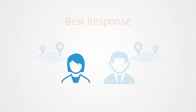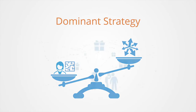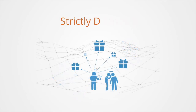Sometimes one person's best choice is the same no matter what others are doing, and this is called a dominant strategy for that player. Hence, a strategy is dominant if it is always better than any other strategy for any profile of other players' actions. A strategy is termed strictly dominant if, regardless of what any other players do, the strategy gives the player a strictly higher payoff than any other. If a player has a strictly dominant strategy, then they will always play that strategy in equilibrium.